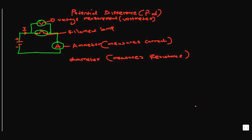The ohmmeter measures circuit resistance. If you don't want to buy the voltmeter, the ammeter, and the ohmmeter separately, buy an instrument called the multimeter — a universal instrument that can measure voltage, current, and resistance.